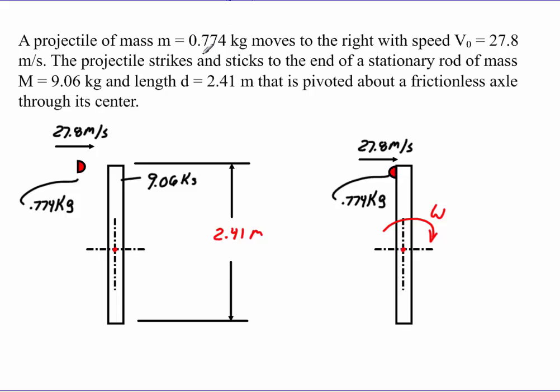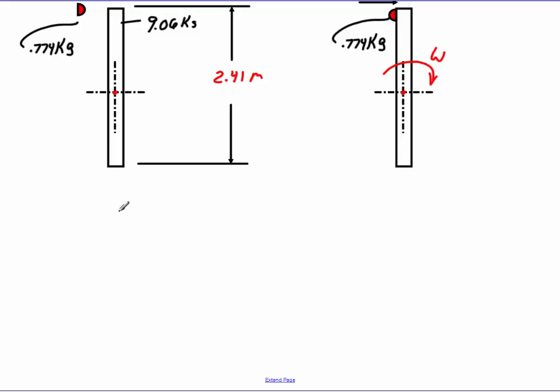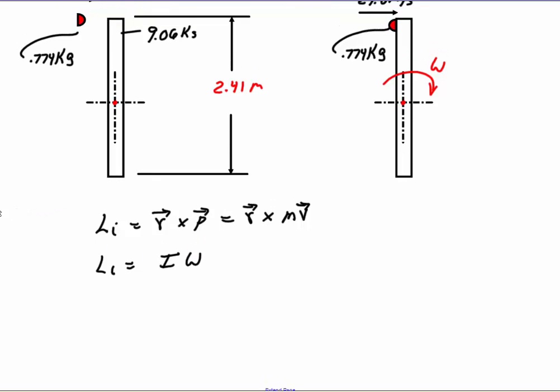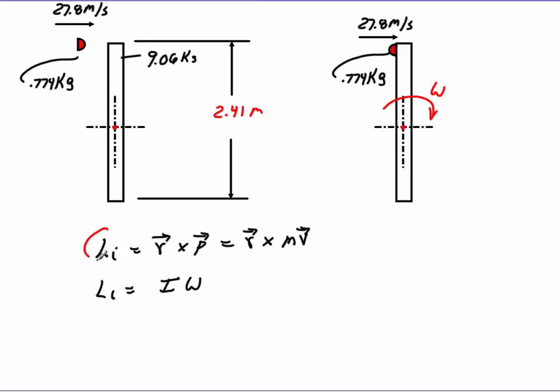To work the problem first you want to find out what is the initial angular momentum. Now there's two equations we can use for this. Linear momentum can be the cross product of R cross product with momentum P, which is basically equal to R cross product of mass times velocity. And the other one, if it's just an object that's rotating, then we can use I times our angular velocity. In this case, initially, we're just going to be using this here.